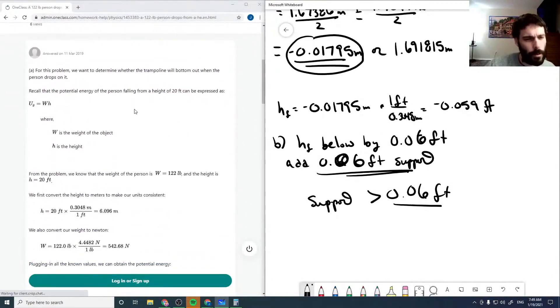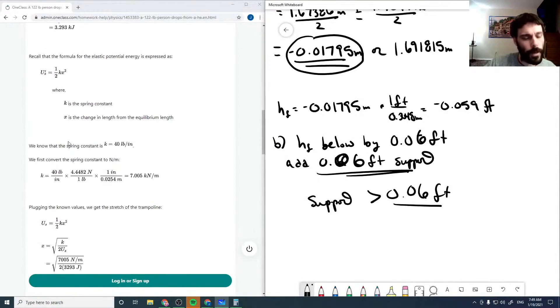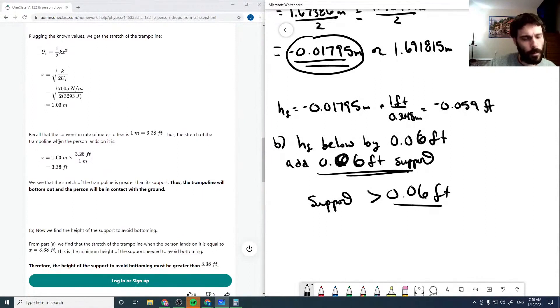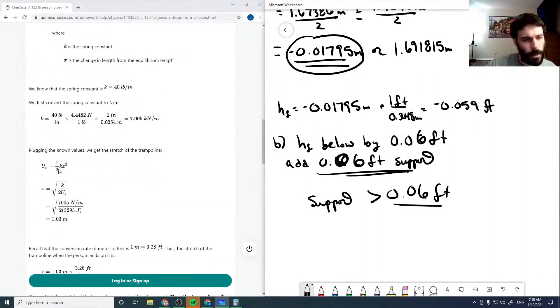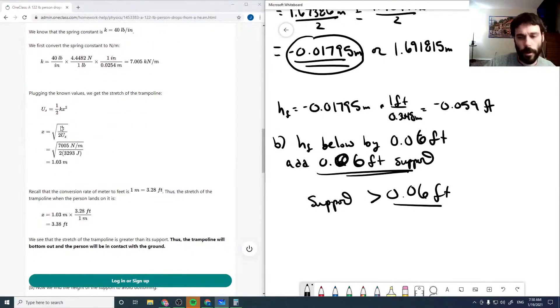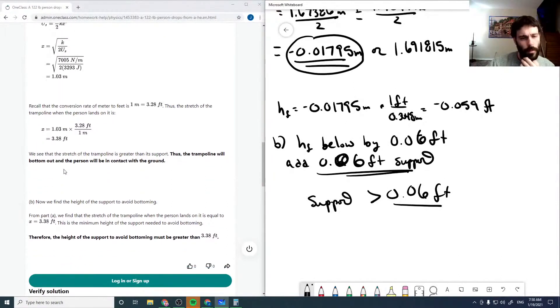Okay. So get our initial potential energy, set it equal to our final potential energy. So the only issue here is they're solving for x directly, which is doable, but without taking into account your initial potential, your final potential energy. 3.38 feet.